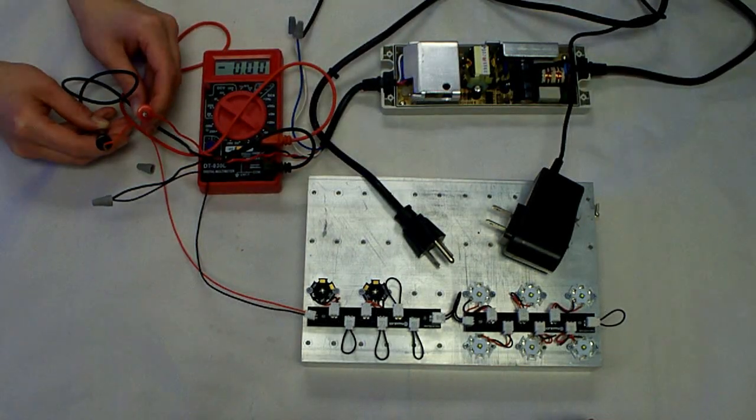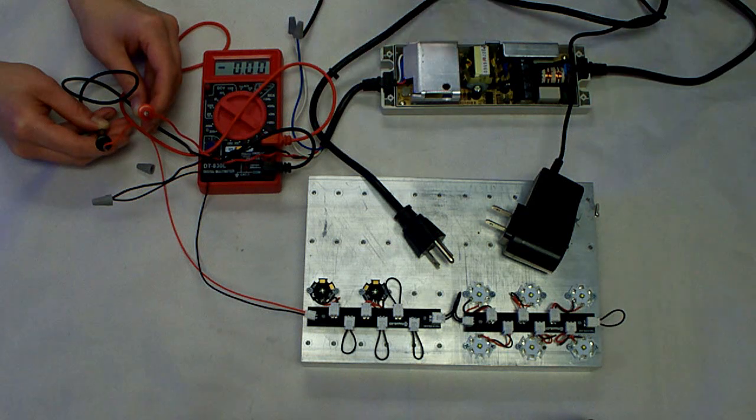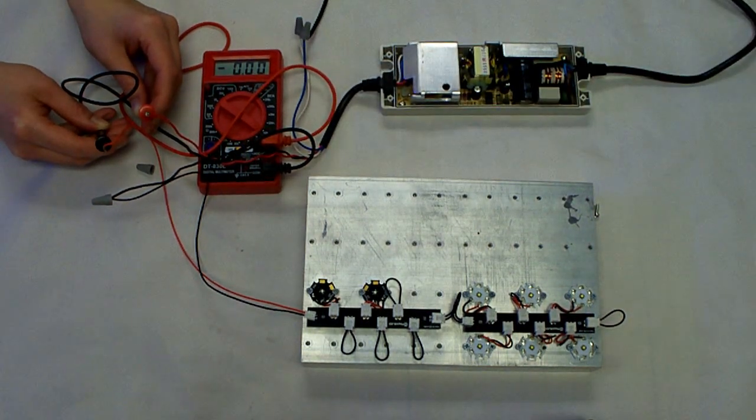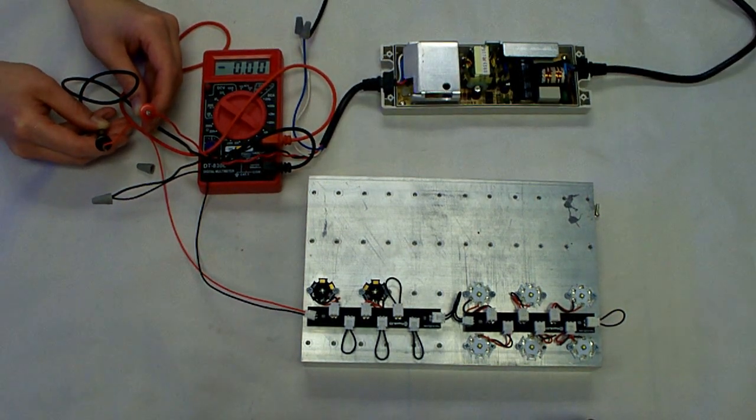Once your multimeter is connected to the wires and it's a good solid connection, go ahead and plug in both your power cord as well as your AC adapter. If your meter is on, the lights should come on.